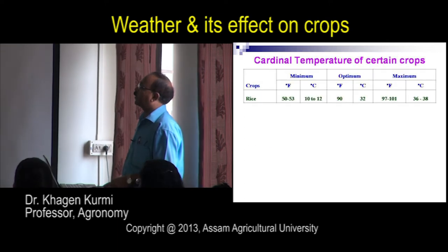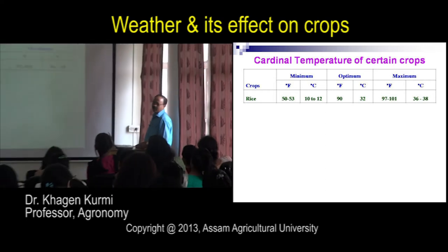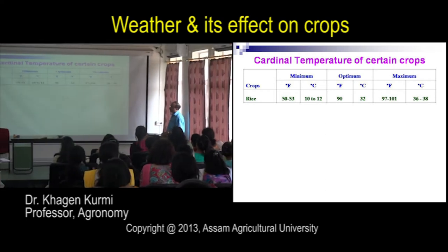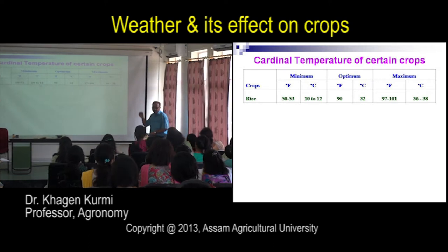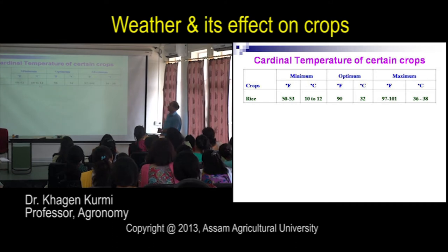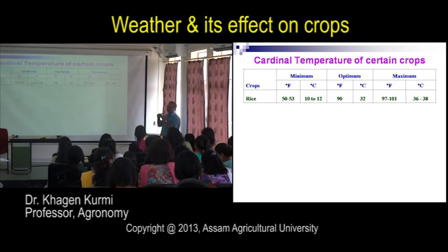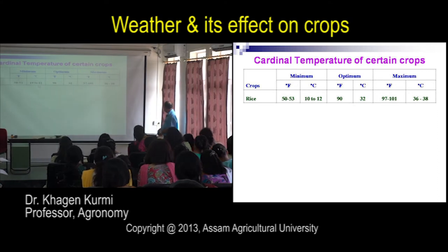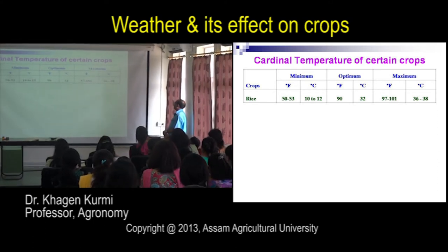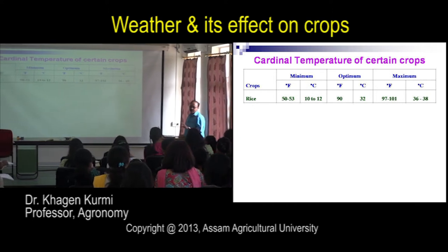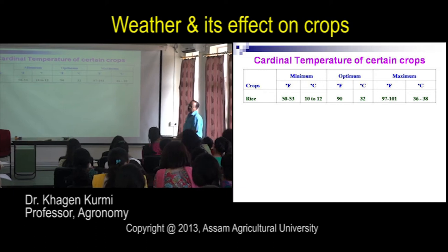For specific crops: rice has a minimum of 10 to 12°C — below this there will be no growth. The optimum is 32°C and maximum is 36°C. For flowering or fruit setting the range is different — 36 to 38°C maximum.